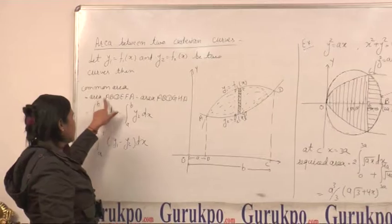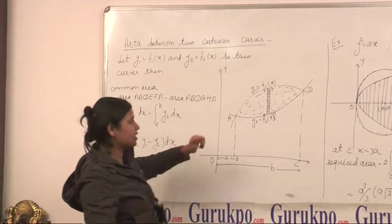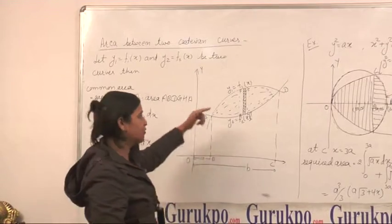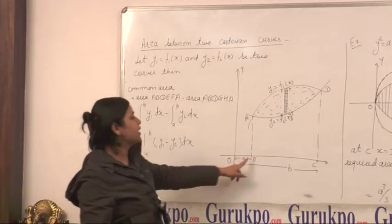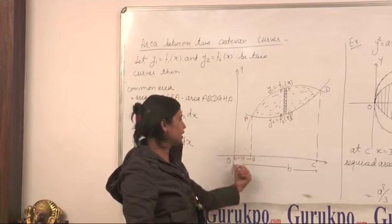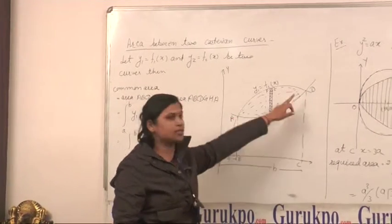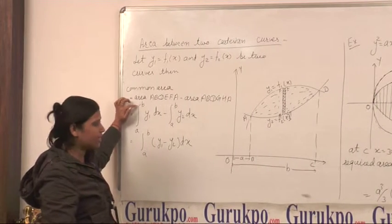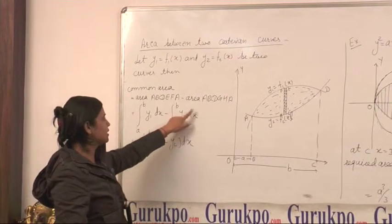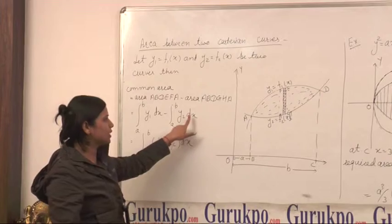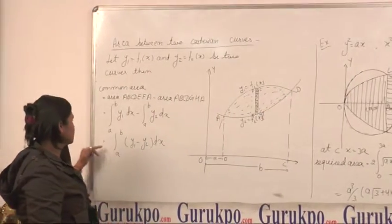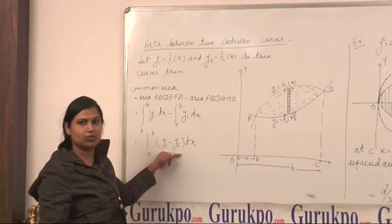We know that area ABCDEF is the area between this curve and x-axis. And we know that this is given by A to B, where A is this point A and B is this point B. So, its value is A to B y1 dx and A to B y2 dx. Y2 is this lower curve. That means this is A to B (y1 minus y2) dx.